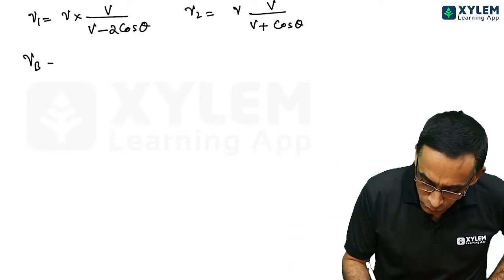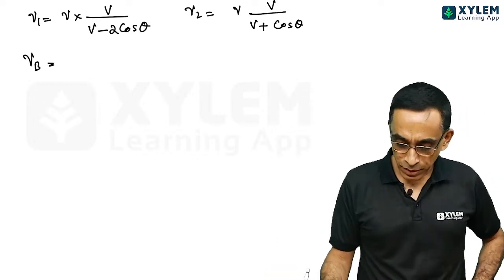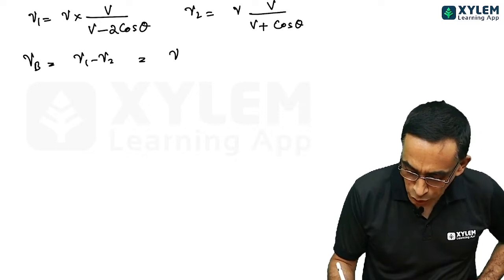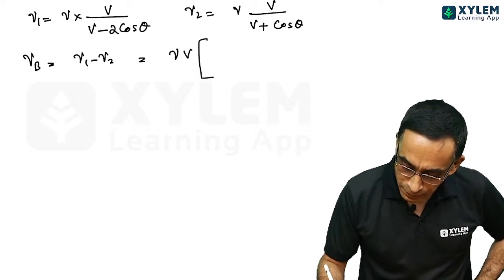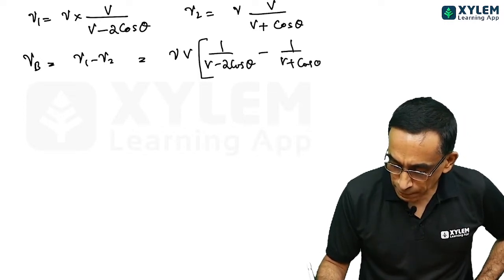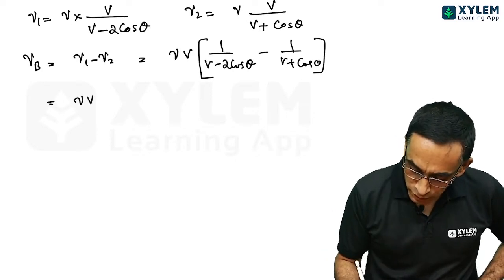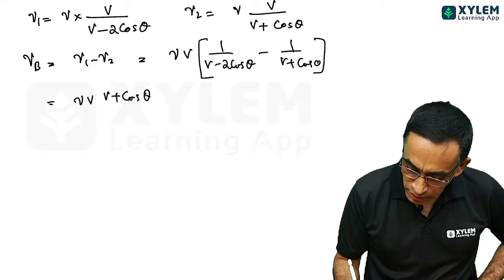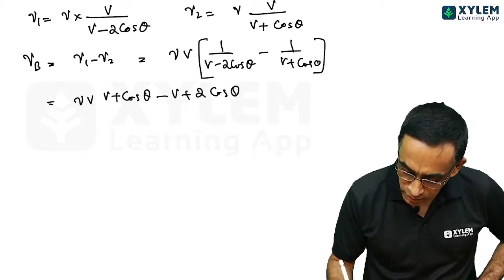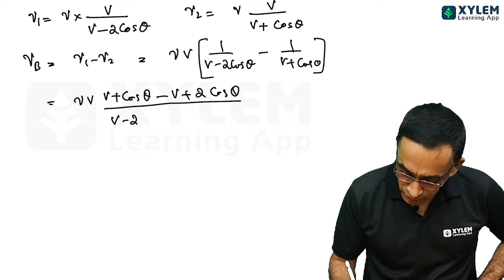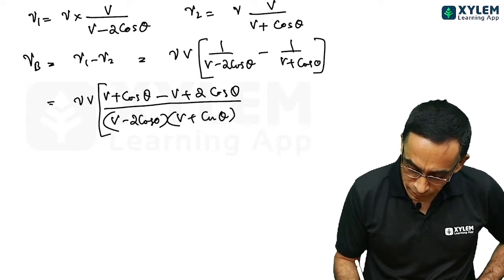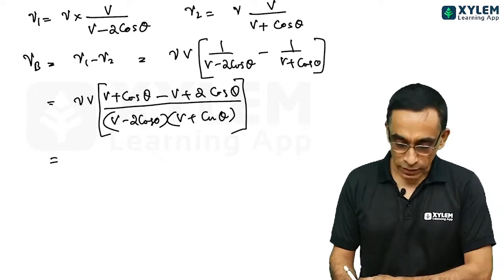Now, the number of beats will be equal to, of course, the first frequency must be greater than the second frequency. So this will be like a nu 1 minus nu 2. I will common at the nu and v common on a bracket. 1 by v minus 2 cos theta minus 1 by v plus cos theta. I will give you nu into v into v plus cos theta minus v plus 2 cos theta divided by v minus 2 cos theta into v plus cos theta.